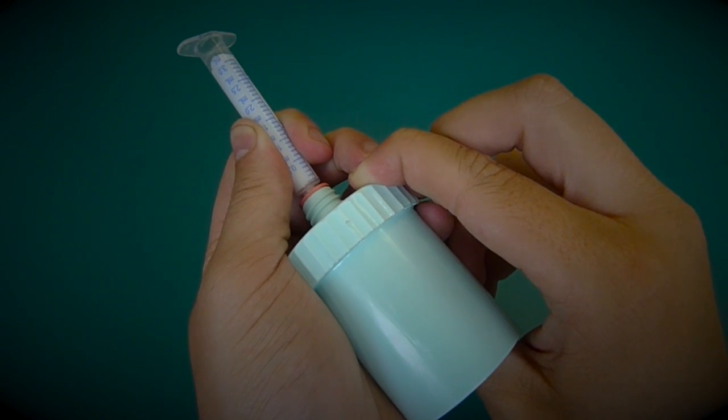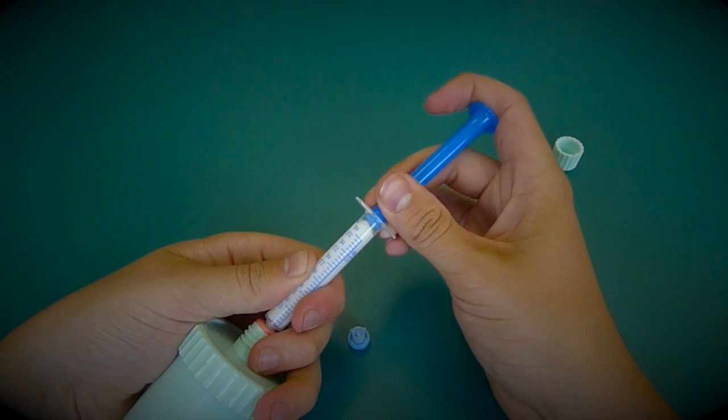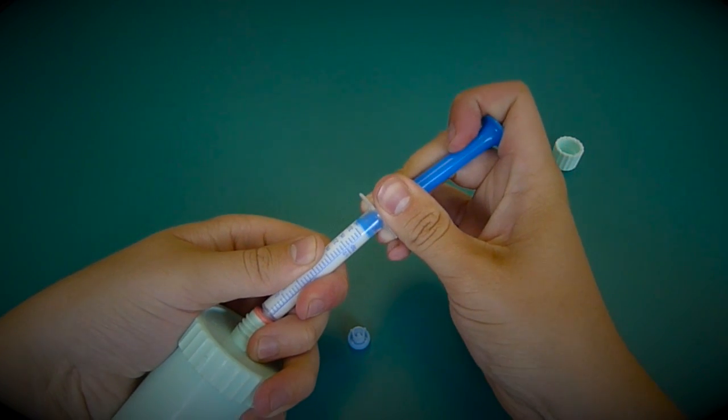Fill all the way to the line and then take your plunger and at an angle slowly wiggle it into place at the 3 mL line.